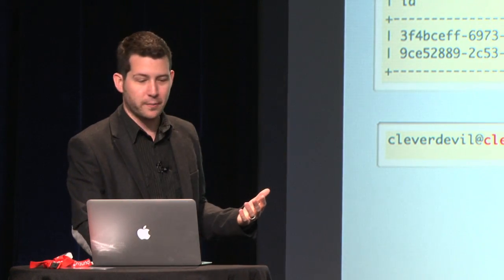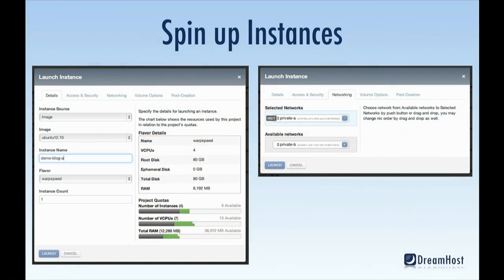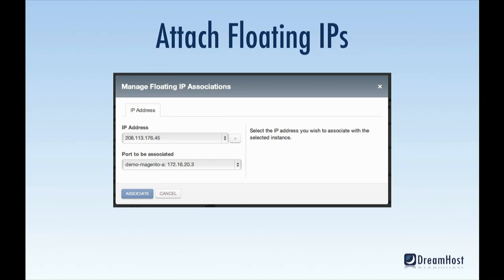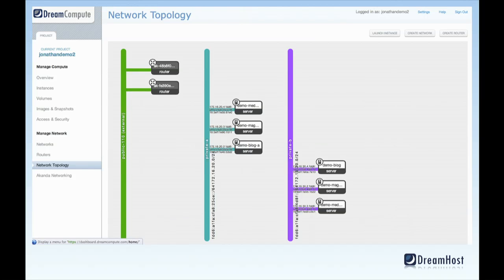Now everything is wired up, but not very interesting without actual virtual machines. I'll create those through Horizon — select an image, a flavor, give it a name, and drag and drop from the available networks my private A and private B networks to connect them to the NIC on the virtual machine as it spins up. After doing this for all six instances, I'll attach floating IPs by allocating a v4 address and connecting it to a port on one of the virtual machines to expose it to the internet. In the network topology diagram now built into the Grizzly version of Horizon, you can see the public network with two routers and two private networks with virtual machines.